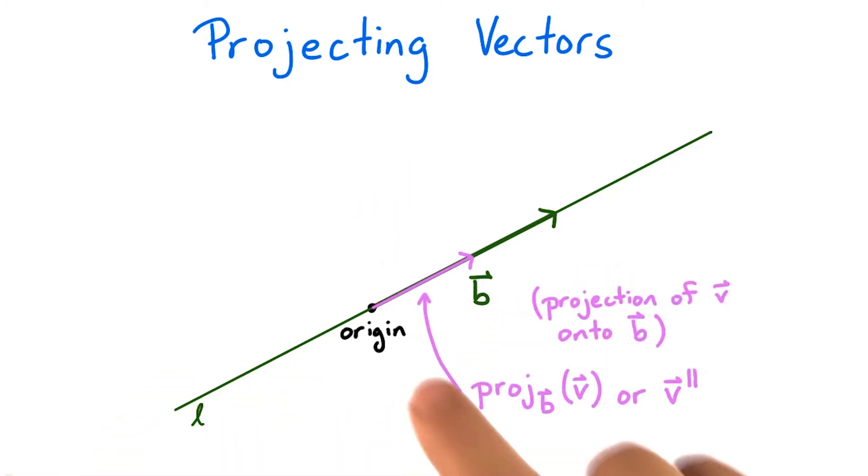Then, measure the apparent magnitude of the arrow v from this point of view. Unless v and b are perfectly parallel, v will look shorter than it actually is.